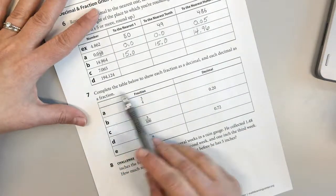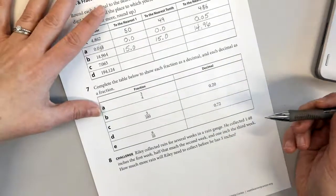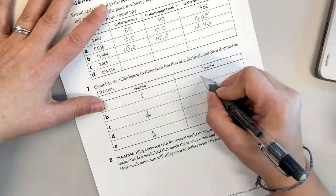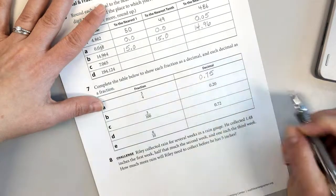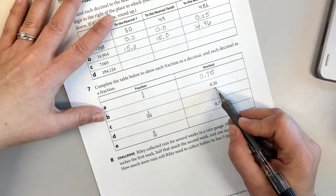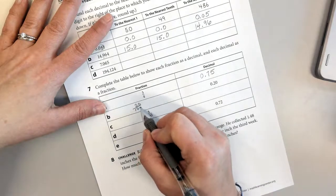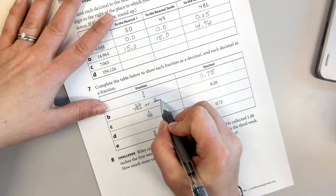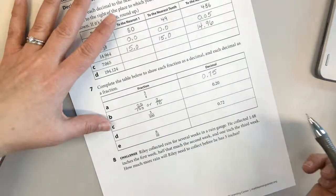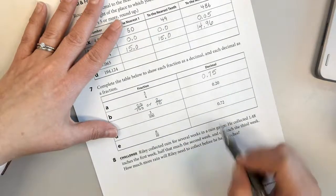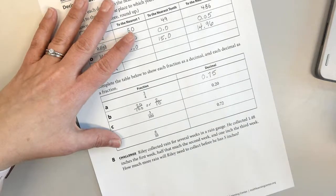Complete the table below to show each fraction as a decimal and each decimal as a fraction. Three-fourths I know is the same as seventy-five cents, so that's what I'm going to put as my decimal. Two twenty-hundredths could be written twenty-hundredths or two-tenths. Either one is just fine. You can do three-hundredths, seventy-two-hundredths, just like money, seventy-two cents. Think about it that way. And six-tenths yourself.